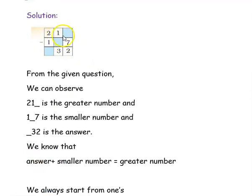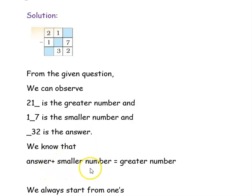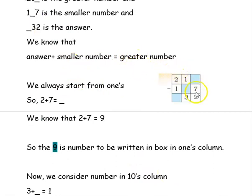The next example given is 21-dash minus 1-dash-7, and the answer is dash-32. From the given question, 21-dash is the greater number, 1-dash-7 is the smaller number, and dash-32 is the answer. Using the concept that answer plus smaller number equals greater number, we start from the ones column. The answer is 2 and the smaller number is 7, so 2 plus 7 equals dash (the greater number). We know 2 plus 7 is 9, so 9 is the number to be written in the ones column box.